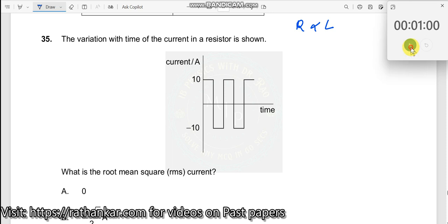Question number 35. The variation with time of the current in a resistor is shown. So, what is root mean square current?